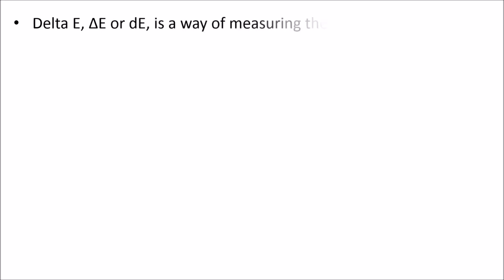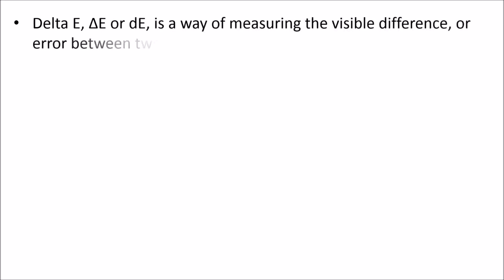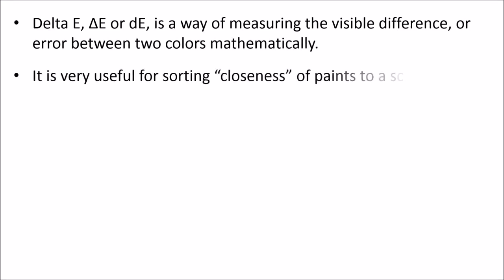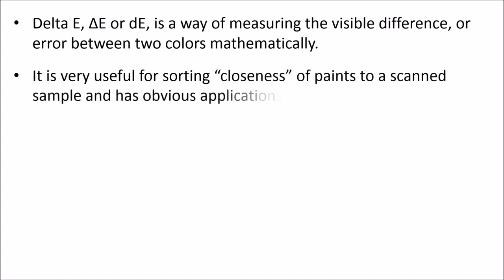Delta E is a way of measuring the visible difference or error between two colors mathematically. It is very useful for sorting closeness of paints to a scanned sample and has obvious applications in industrial and commercial quality control.